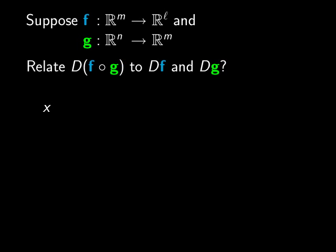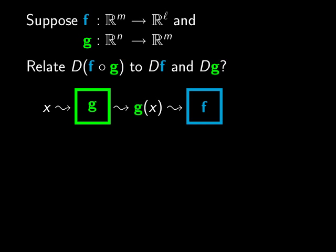Just to get a sense for this, let's suppose that we start with a vector x in R^n. We can feed that vector into g and we get g of x, a vector in R^m. We can feed that vector into f and we get f of g of x, a vector in R^l. That's just how the composition of functions works.